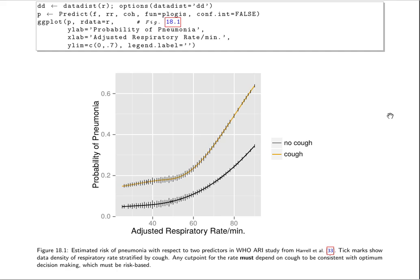You can see from the predictions that the interaction was not really needed, but we are allowing that to make sure. The little tick marks show the data density in the raw data. There were approximately 4,500 kids in the data set. So you can see that the faster the respiratory rate, the higher the chances that the child will be diagnosed with pneumonia, and a child with a cough is more likely to have pneumonia than a child without a cough.